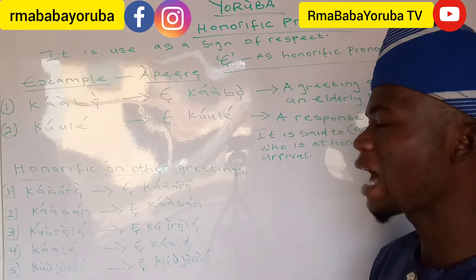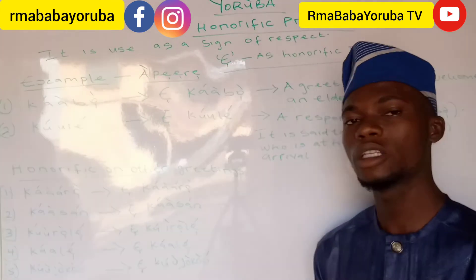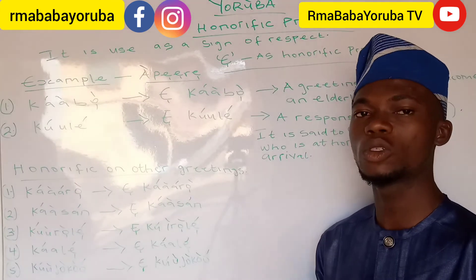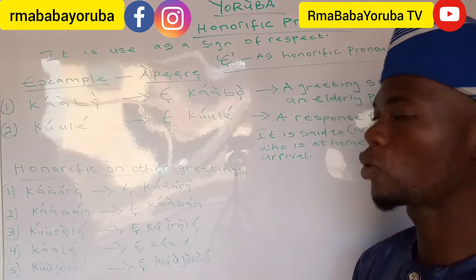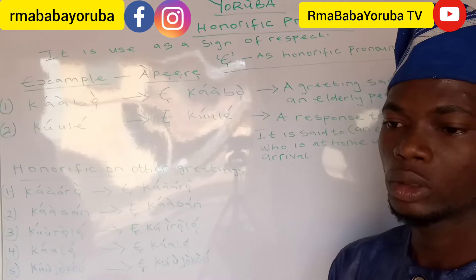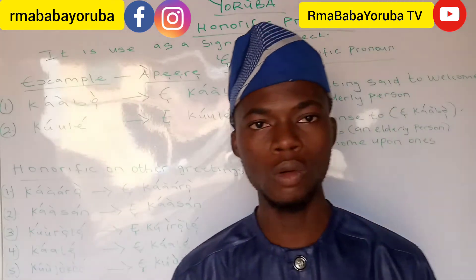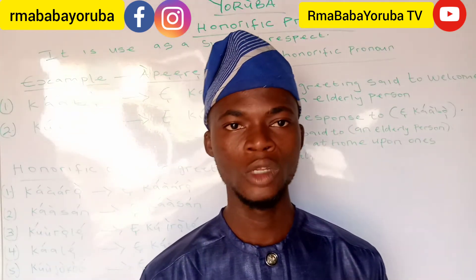Likewise, 'e kaale' to an elderly person means good evening. And lastly, 'e kuujoko' is a greeting said to an elderly person who is seated.